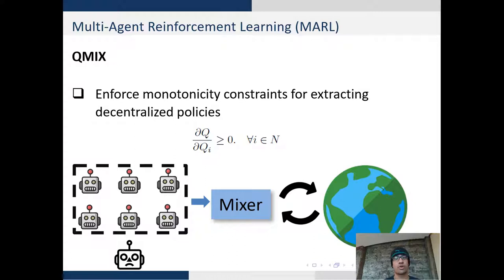The mixing connections enforce monotonicity constraints by extracting decentralized policies. The only constraint which is to be satisfied is that the derivative of the joint Q-value with respect to each individual Q-value should be greater than or equal to zero.